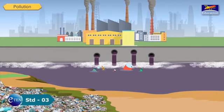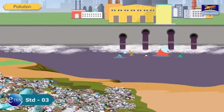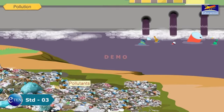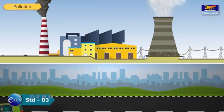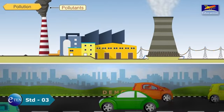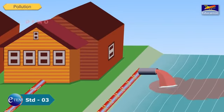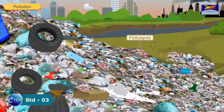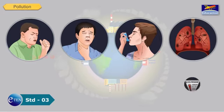Pollution is when something added to the environment is harmful or poisonous to living things. The substances that cause pollution are called pollutants. Smoke from vehicles and factories and dust in the air are called air pollutants. Sewage water that drains into a river is a pollutant that pollutes water. Waste materials dumped on land are called land pollutants. Pollution leads to many diseases and may even cause loss of life.